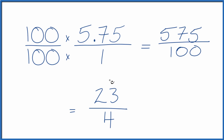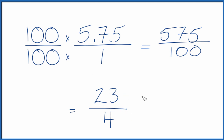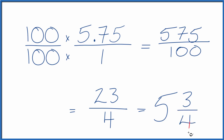This is an improper fraction though, because 23 is larger than 4, so we could change it to a mixed number. 4 goes into 23 five times with 3 left over, and we bring the 4 across. So 23 fourths equals 5 and 3 fourths. The decimal 5.75 equals the fraction 23 fourths, or if you want a mixed number, 5 and 3 fourths.